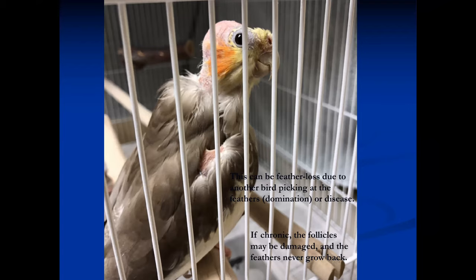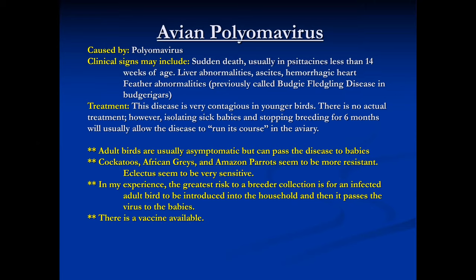Polyomavirus is primarily a disease of young birds, usually under about 8 to 12 weeks old. We don't see it as much now because we better understand it. It often causes sudden death, and you'll usually lose the whole nest grouping. It does cause liver abnormalities and often ascites — fluid in the abdomen.